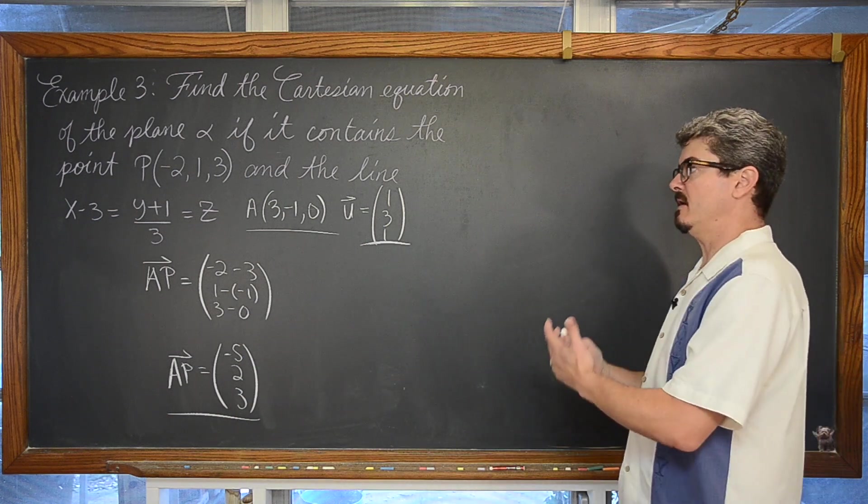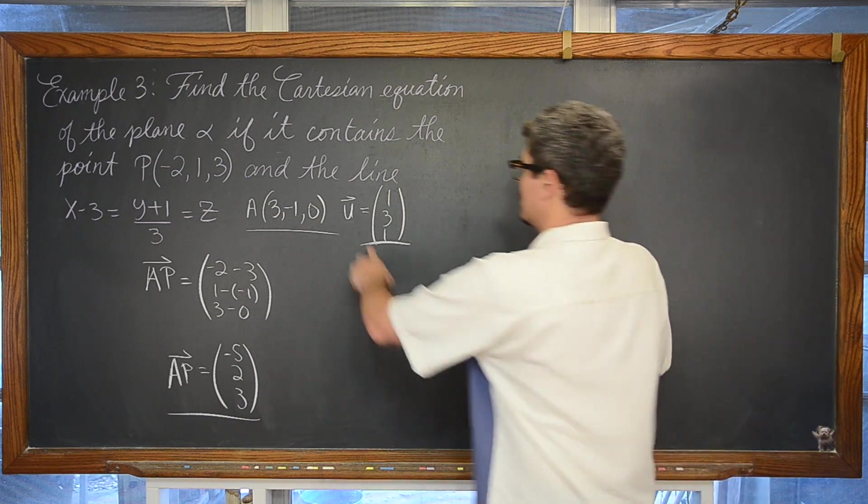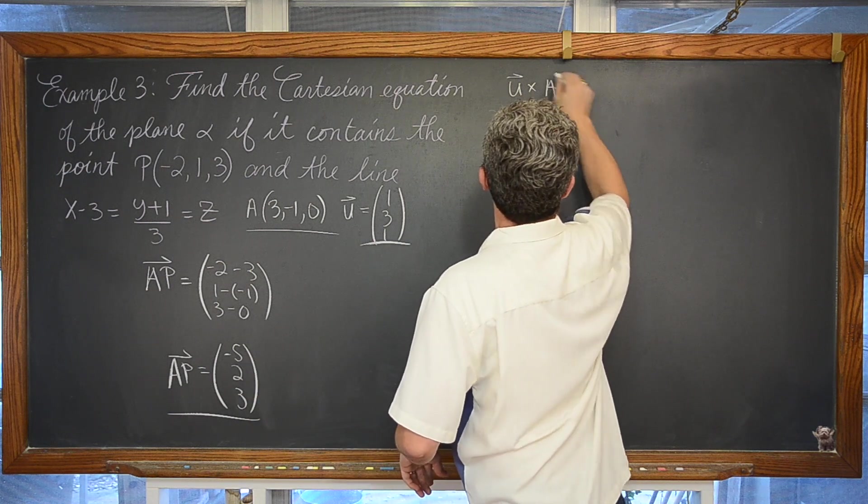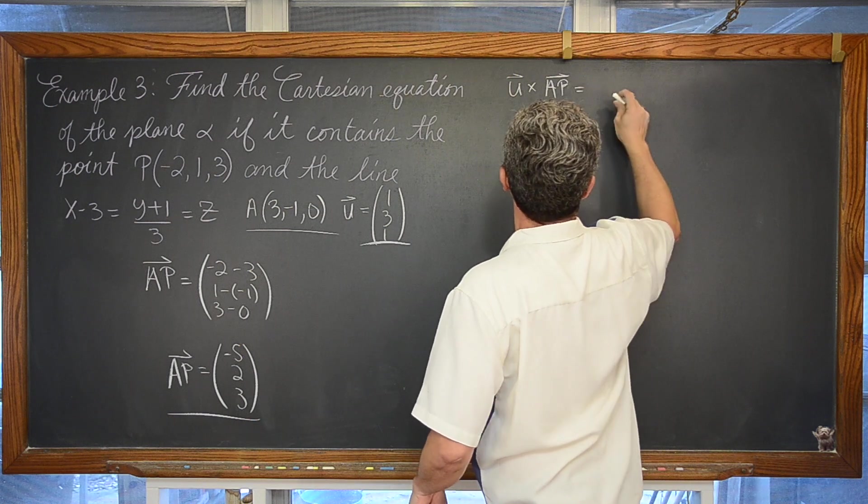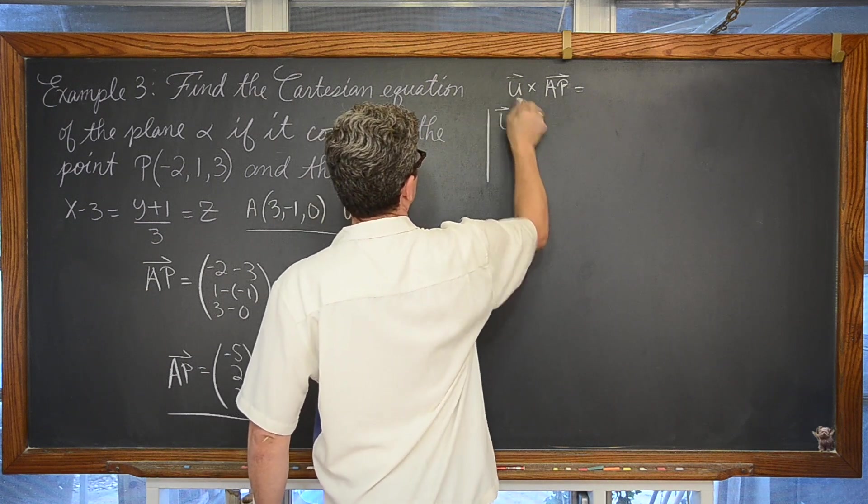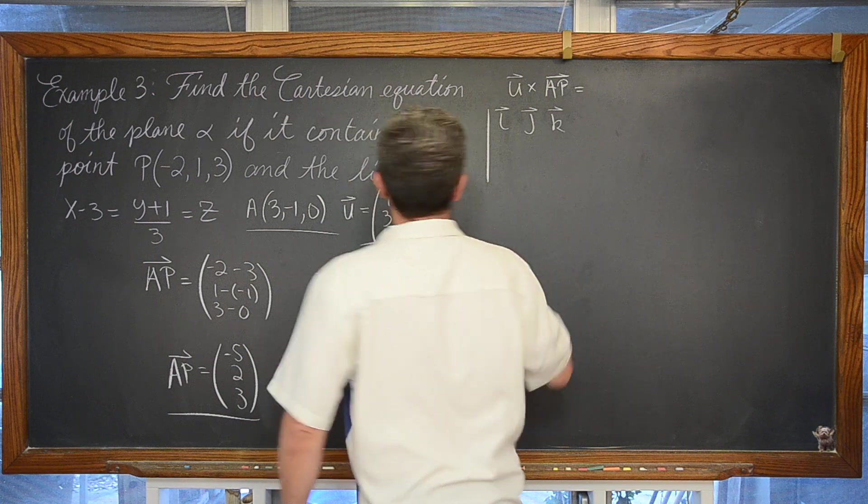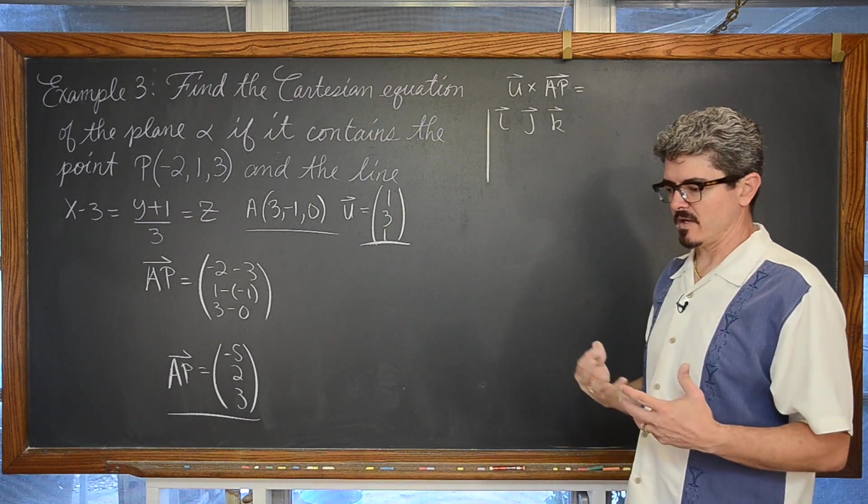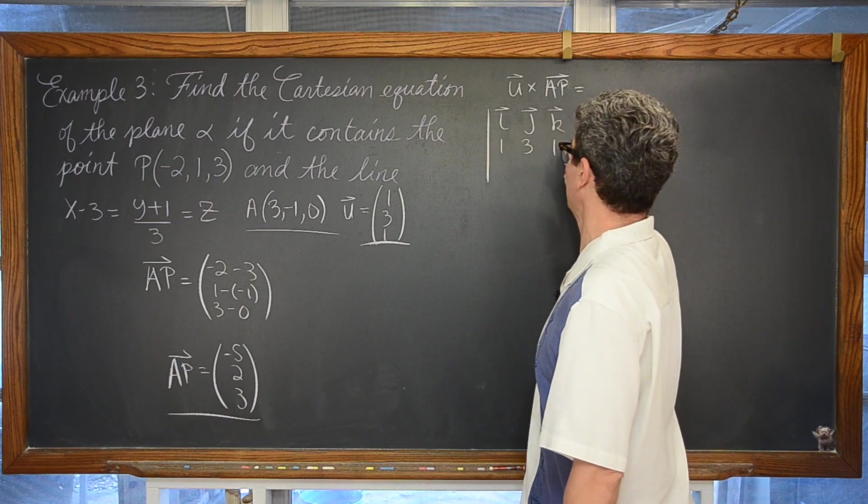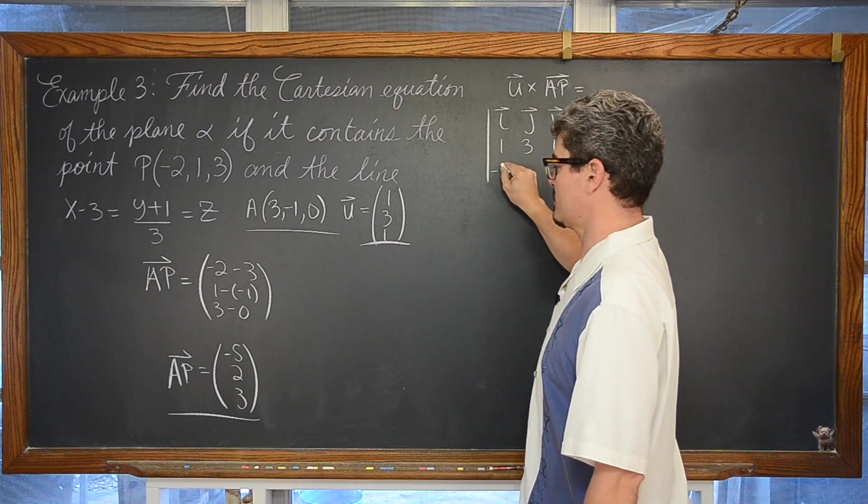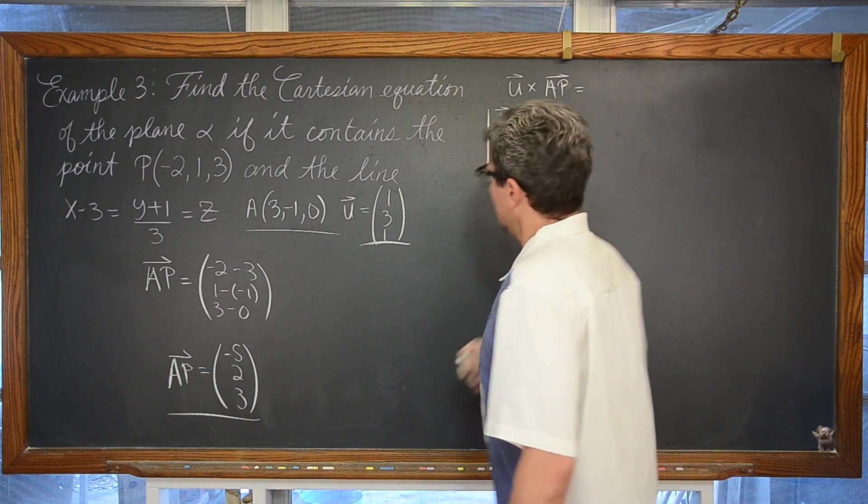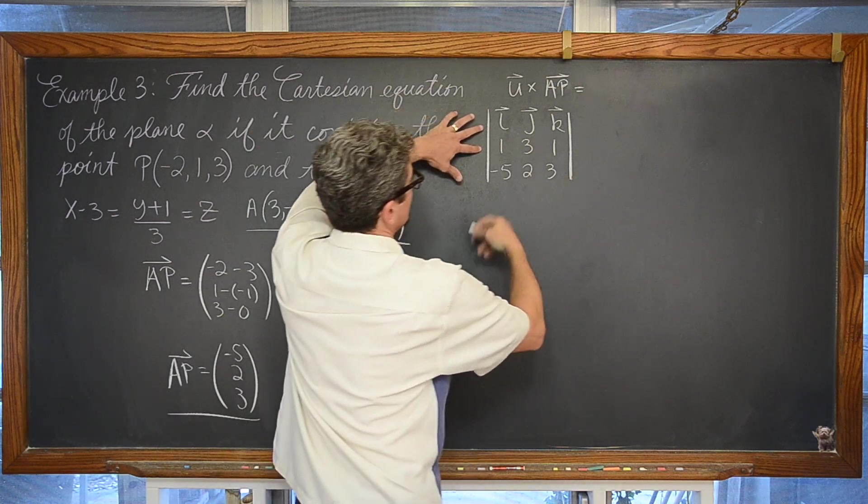Now we are going to find the equation of this plane by finding the normal vector, which we do by the cross product between U and AP, which is going to be found by setting up a 3x3 matrix. You might have noticed some patterns that you can use to find the cross product vector quicker. I just keep showing this process in case your teacher wants some really formal work and to see that you actually know what is going on. But do whatever your teacher is happy with.